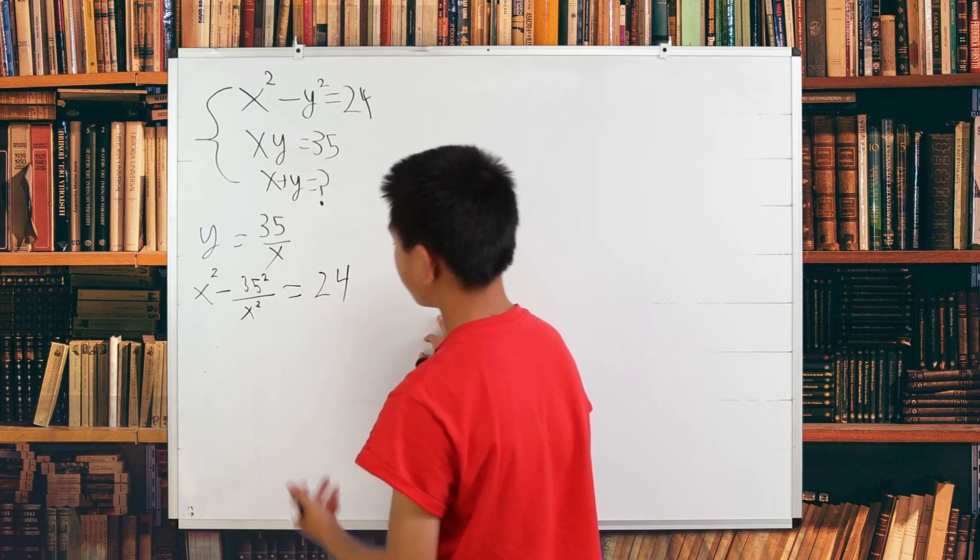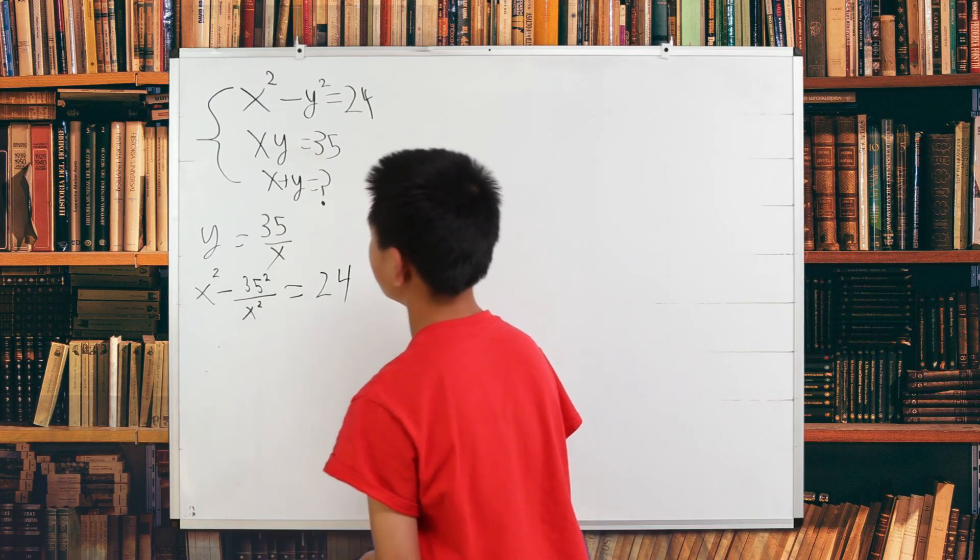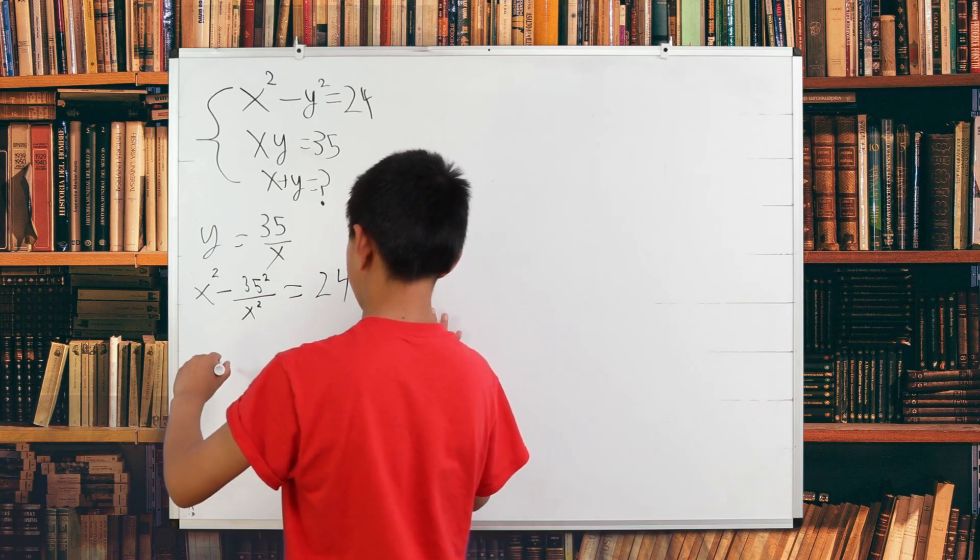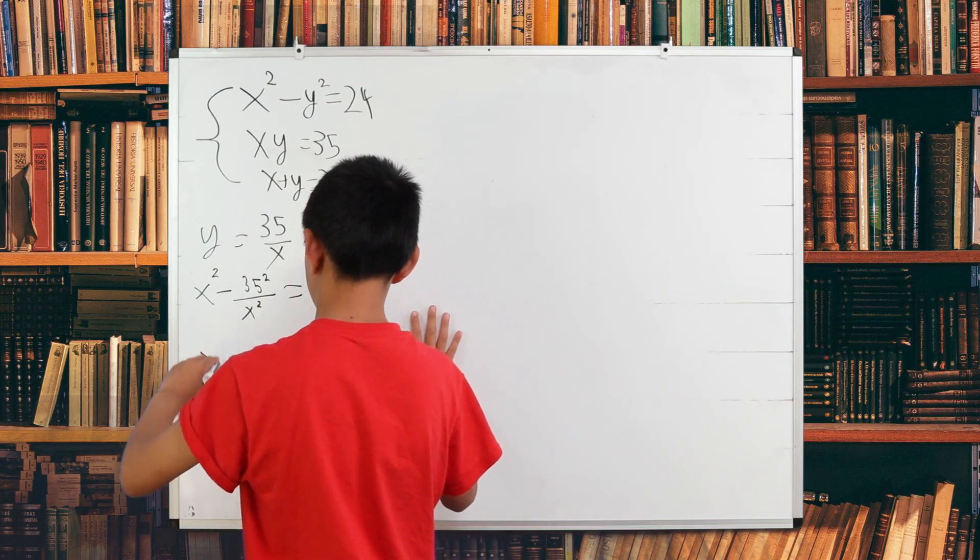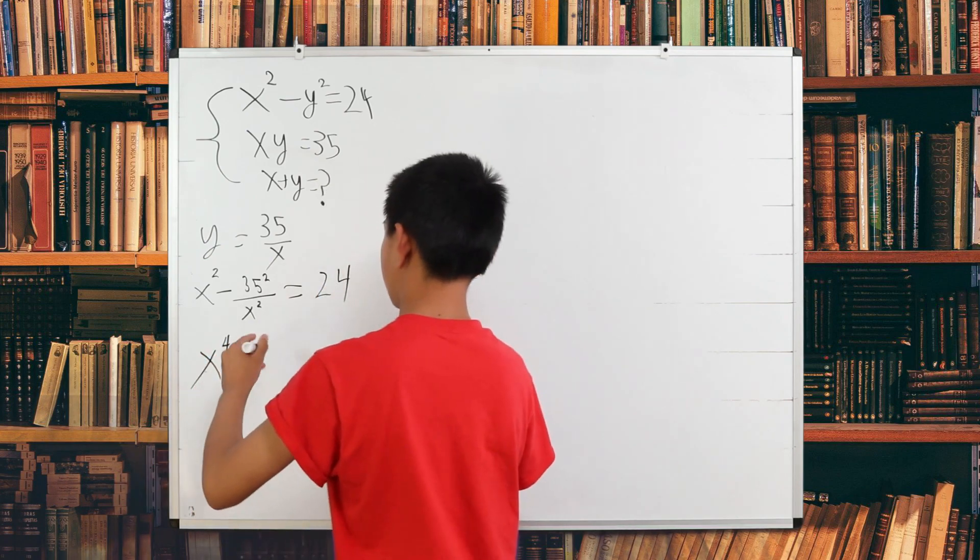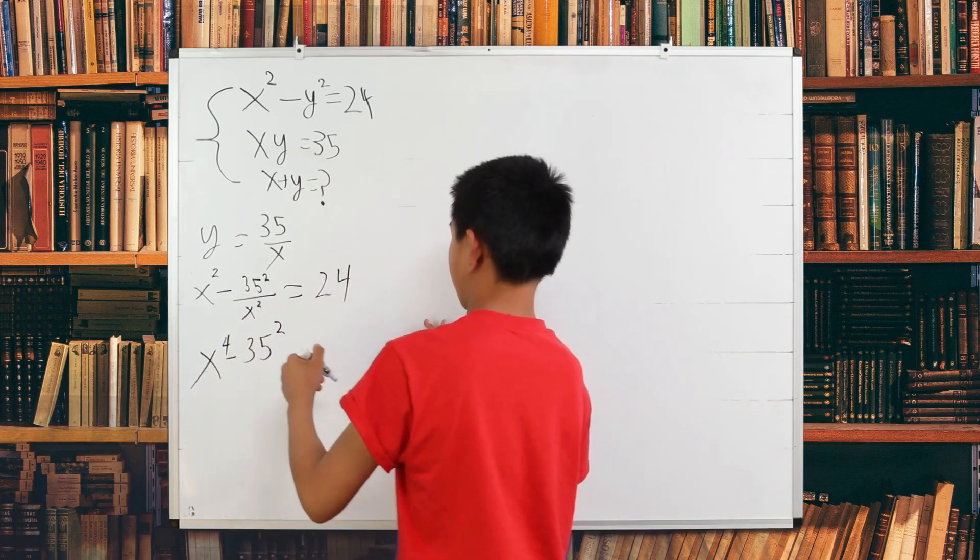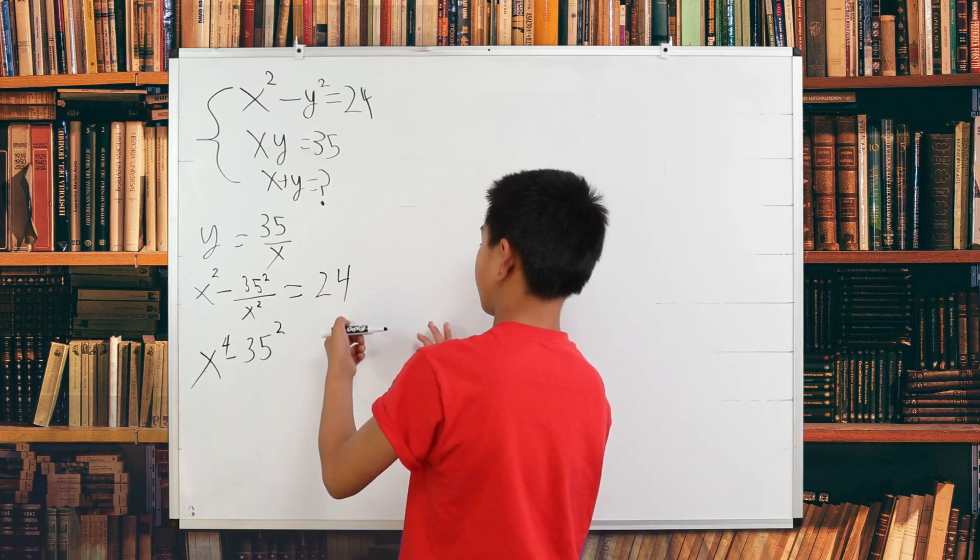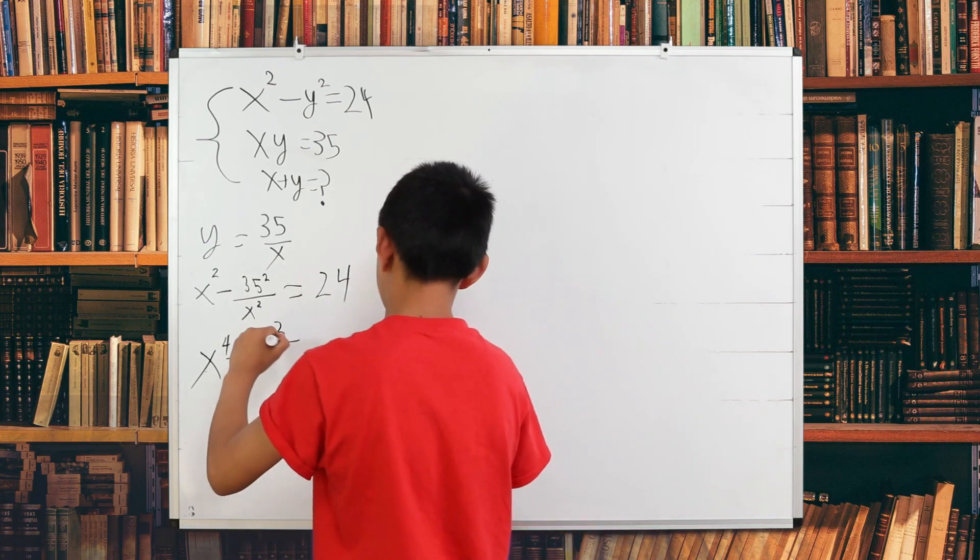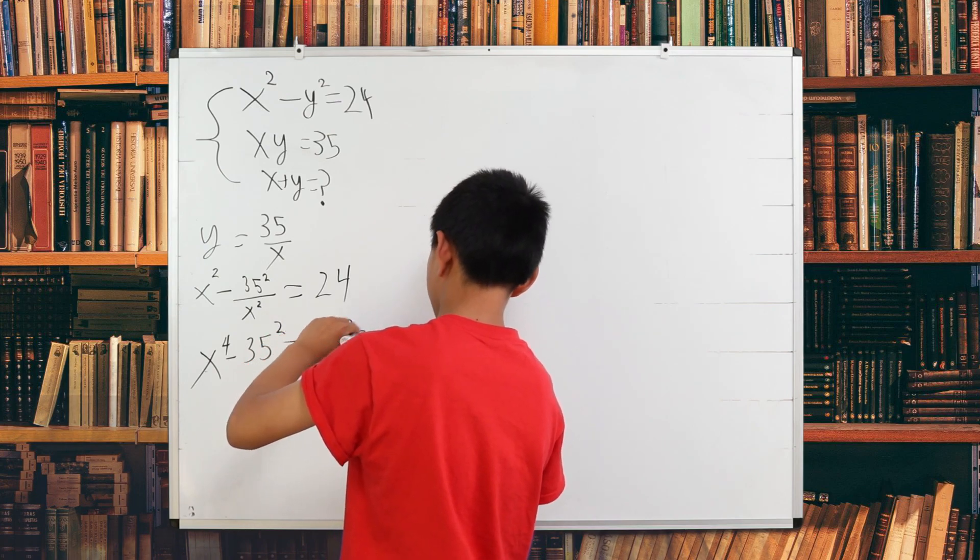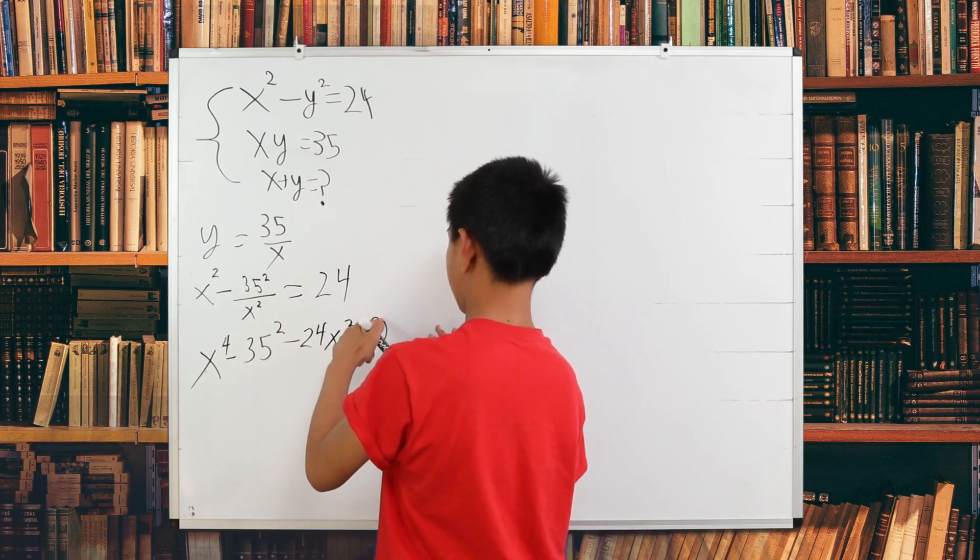And to get rid of that x squared, we have to multiply both sides by x squared. So x squared times x squared is x to the fourth power, x to the fourth power minus 35 squared. We got rid of the x squared and then we move the 24 x squared to this side. So minus 24 x squared is equal to zero.